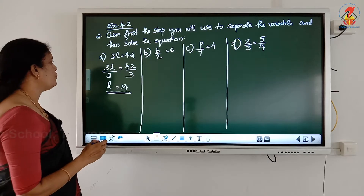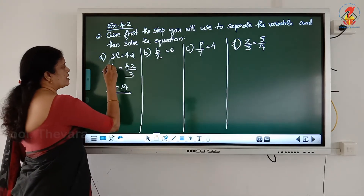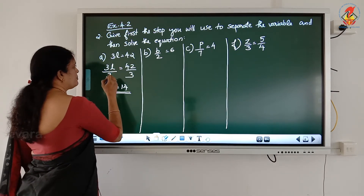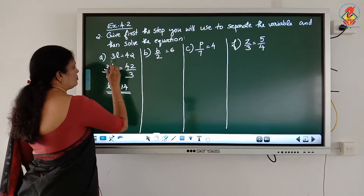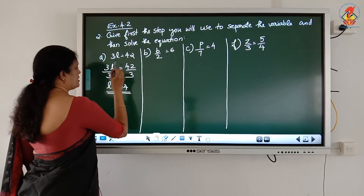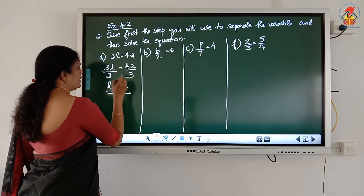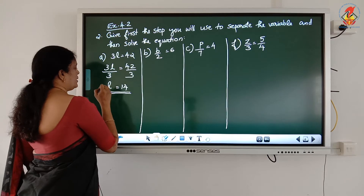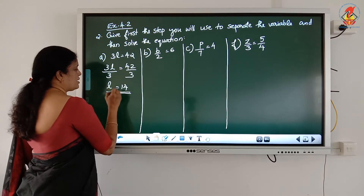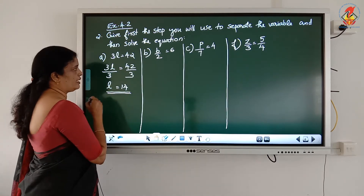How will you eliminate this 3 from the equation? Divide by 3 on both sides, and you will get L = 14.